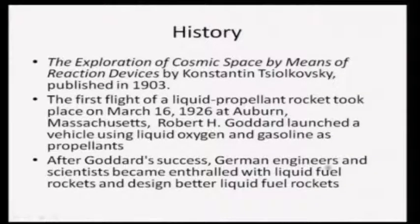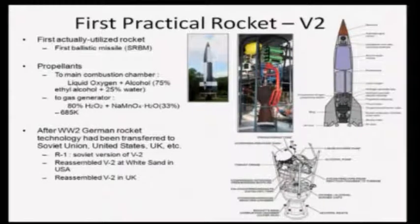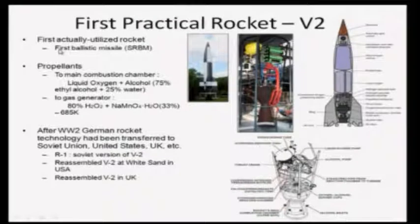After Goddard's success, German engineers and scientists became enthralled with this technology and started to design better liquid fuel rockets. From 1926 until the Second World War, there was rapid development in liquid propellant rockets, as this was identified as the most promising technology to make a viable rocket. The first practical rocket ever used was the V-2 rocket developed by the Germans — the first ballistic missile, specifically a short-range ballistic missile.